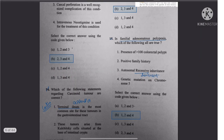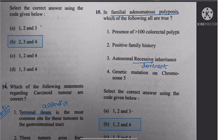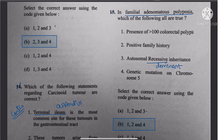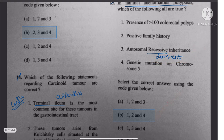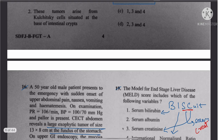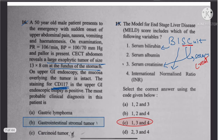Question 15: Familial adenomatous polyposis (FAP) — it is autosomal dominant, so the third statement is wrong. The answer is 1, 2, and 4.